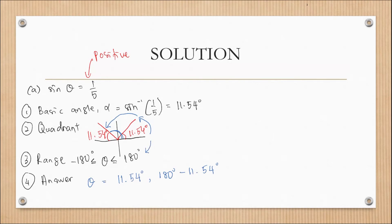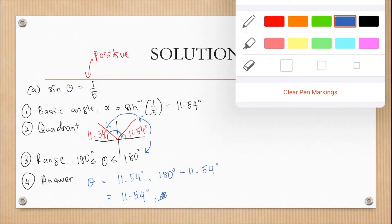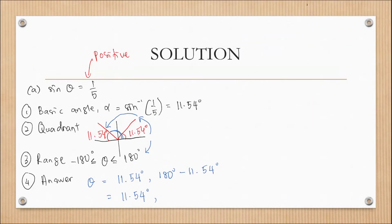For negative 180°, the angles would be in quadrant three and four, but there are no sine-positive angles there. Therefore, the two answers are theta = 11.54° and theta = 168.46°.